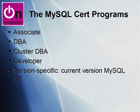The four tracks are: the Associate, the DBA, the Cluster DBA, and Developer. These certification tracks are version specific. The current version as of this recording in late February 2009 is MySQL version 5.1. The Associate is the baseline credential that serves as the prerequisite to the other tracks. In other words, if you eventually want to qualify as a MySQL database administrator, you'll first have to become an Associate — same with Cluster DBA, same with Developer.